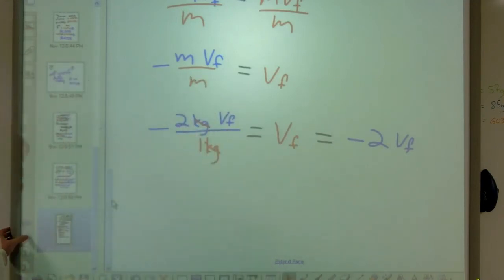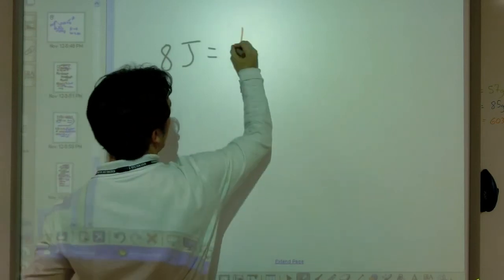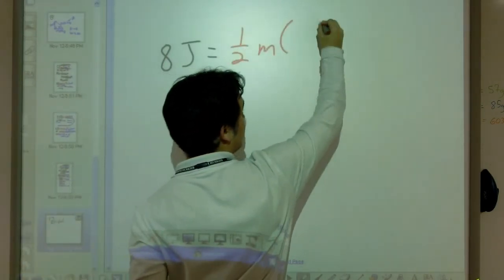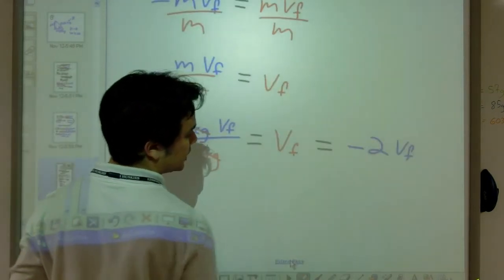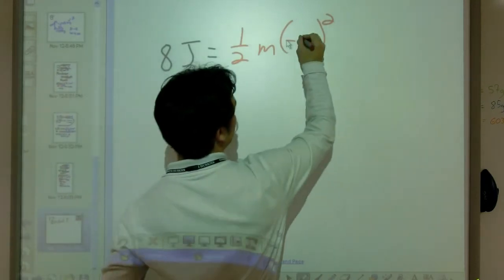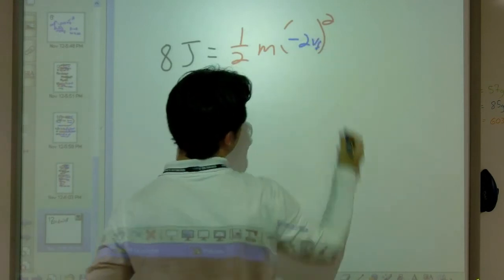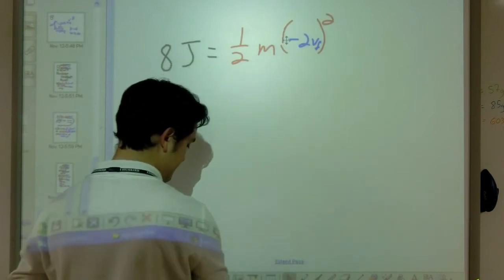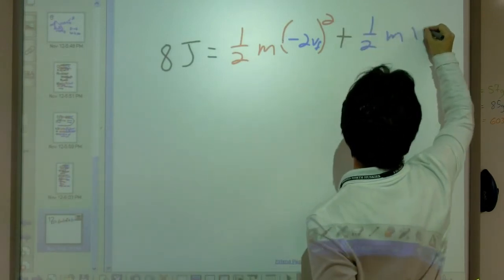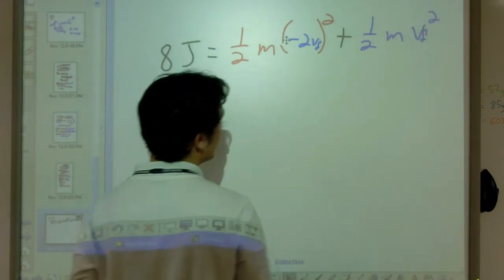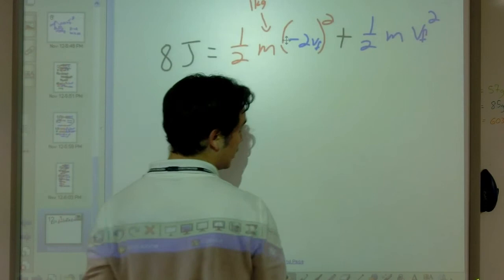Let's go ahead and take that and we're going to plug it back into our energy equation. I'm going to move over to the other side here. We've got 8 joules equals 1 half mass times our final velocity for the red block squared. Well, we just found that, didn't we? In terms of something that we can use. Negative 2 V final for the blue. Let me stick with my color convention. Negative 2 V final. Our final velocity of the blue guy. Plus, 1 half M V final of the blue guy squared. I'm going to clean this up a little bit. I'm going to add in that this is 1 kilogram. And I'm going to add in that the other one over here is 2 kilograms.